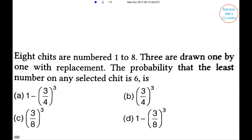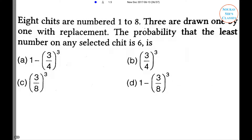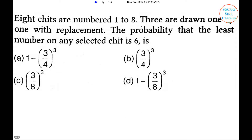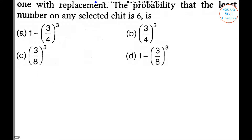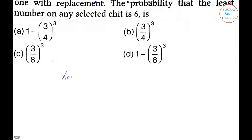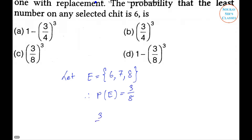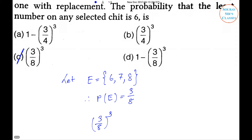Next problem: 8 chits are numbered 1 to 8 and drawn with replacement. Find the probability that the least number on any selected chit is 6. Options are: 1 − (3/4)^q, (3/4)^q, (3/8)^q, and 1 − (3/8)^q. Let event E = {6, 7, 8}, so P(E) = 3/8. The required probability equals (3/8)^q. Option C is the right answer.